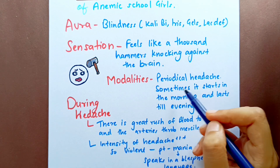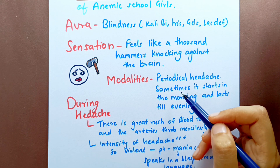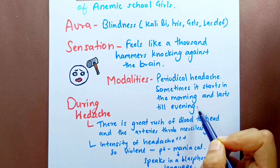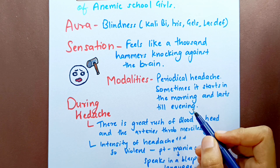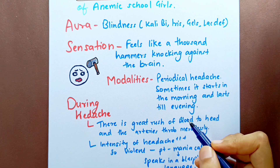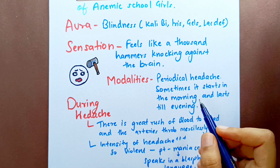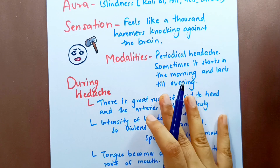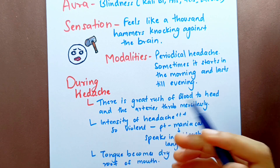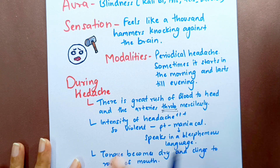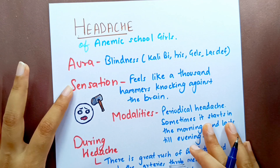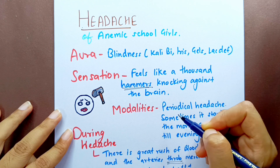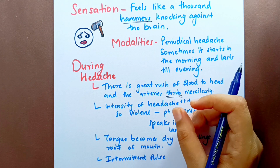The sensation in Natrium Muriaticum headache is very characteristic — they feel as if a thousand hammers were knocking against the brain. The modalities are that this is a periodical headache, sometimes starting in the morning and lasting till evening — this is called a sun headache, because as long as the sun is out these patients can have headache due to sun heat or rays.